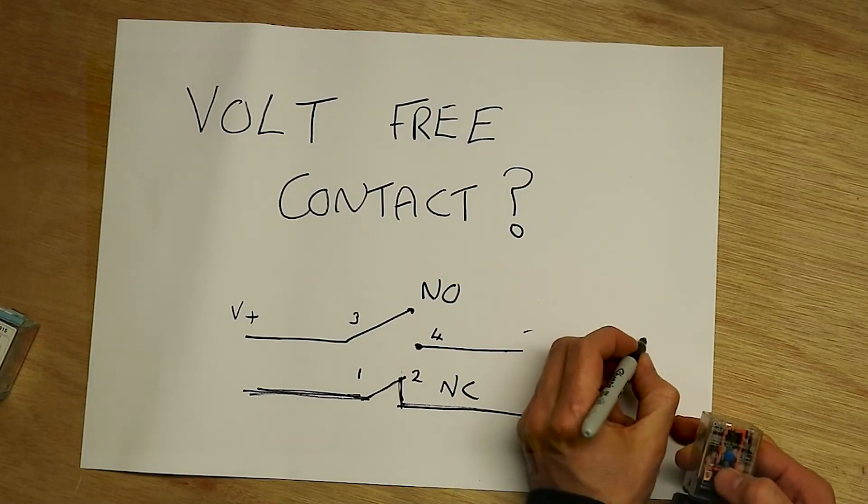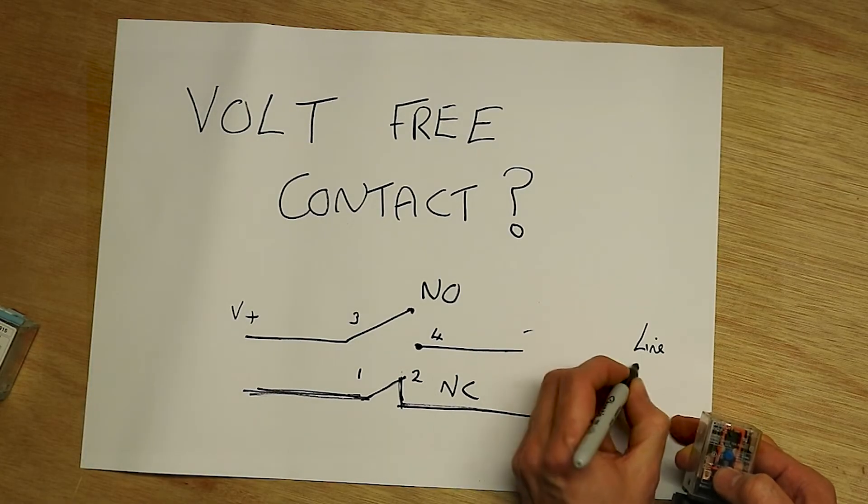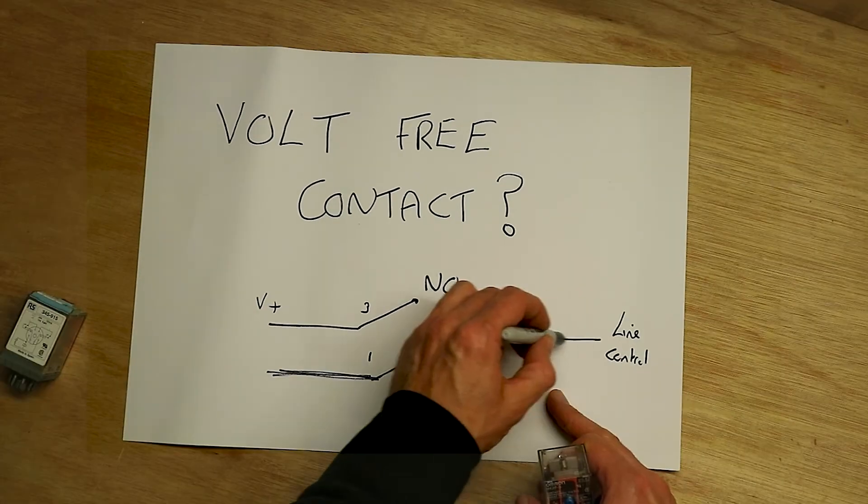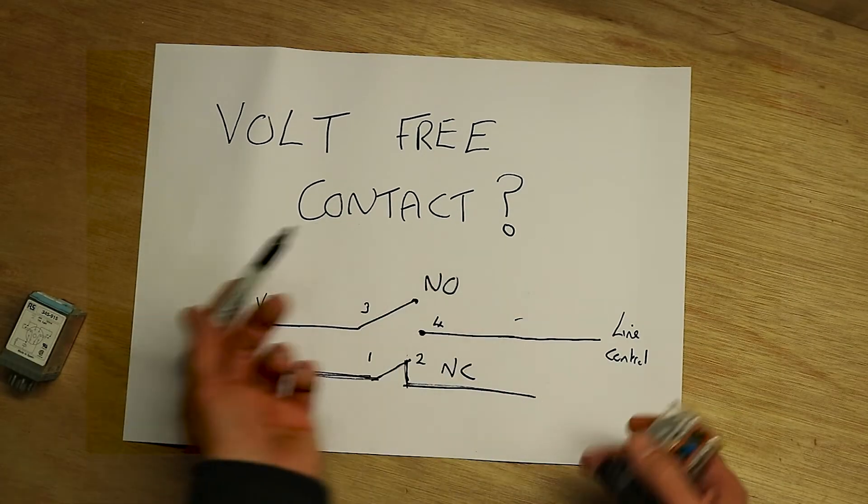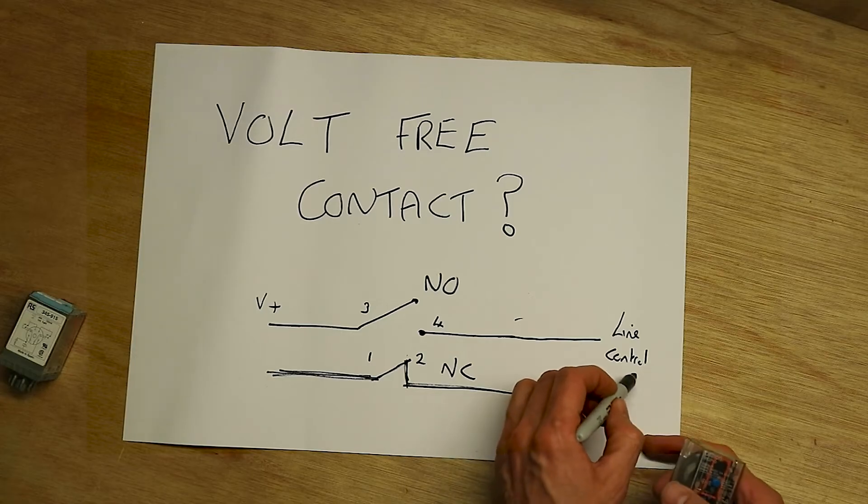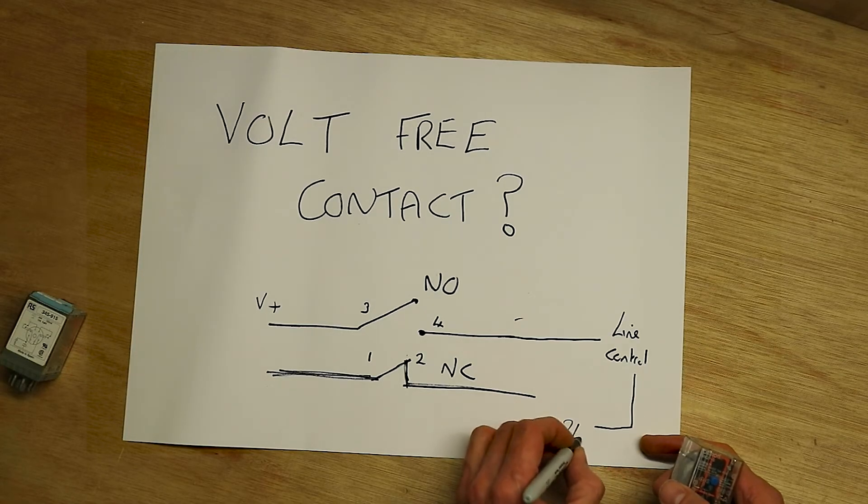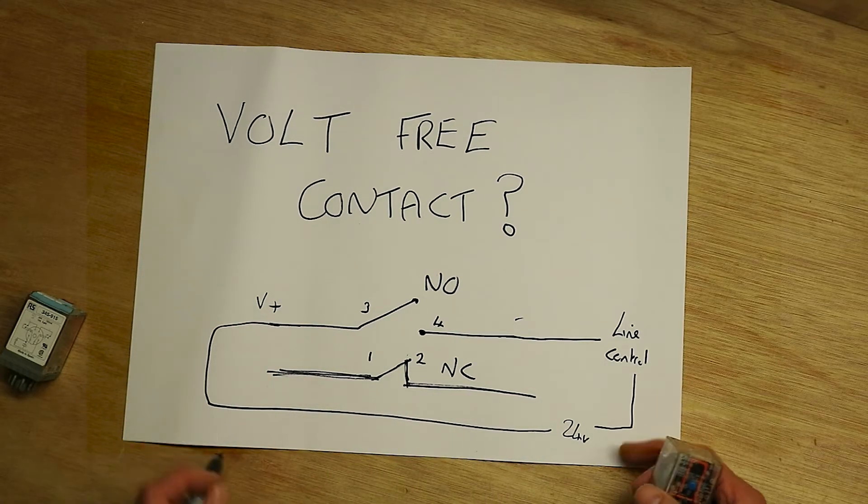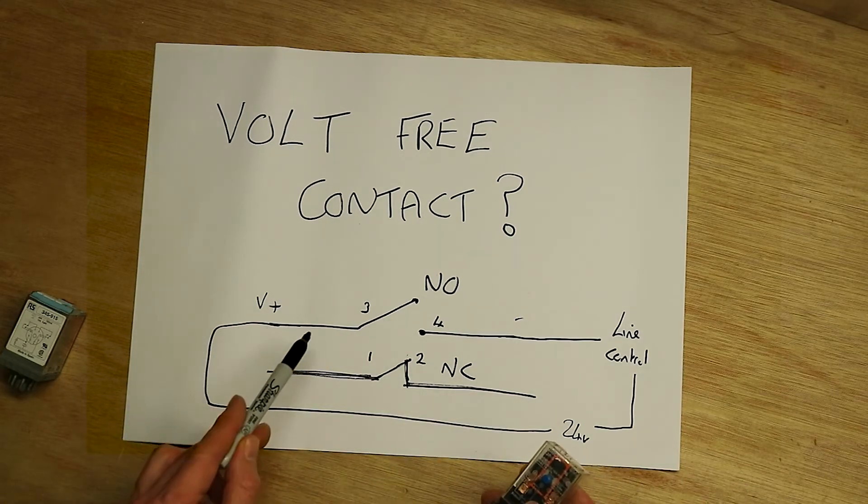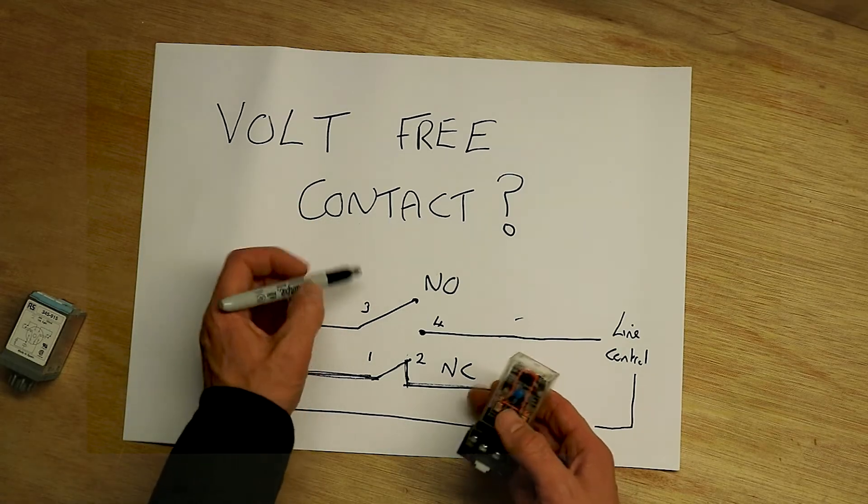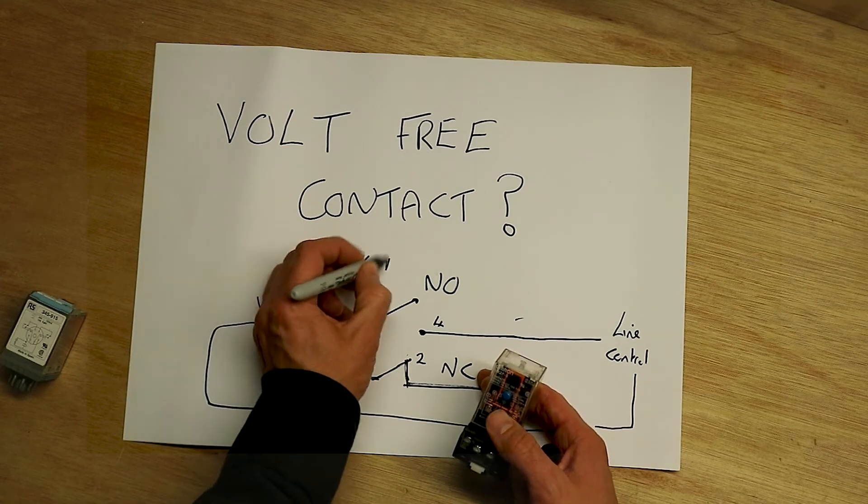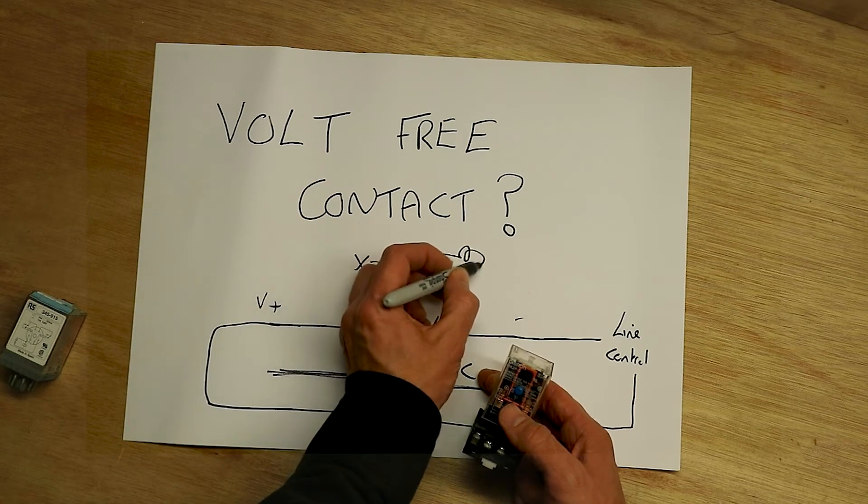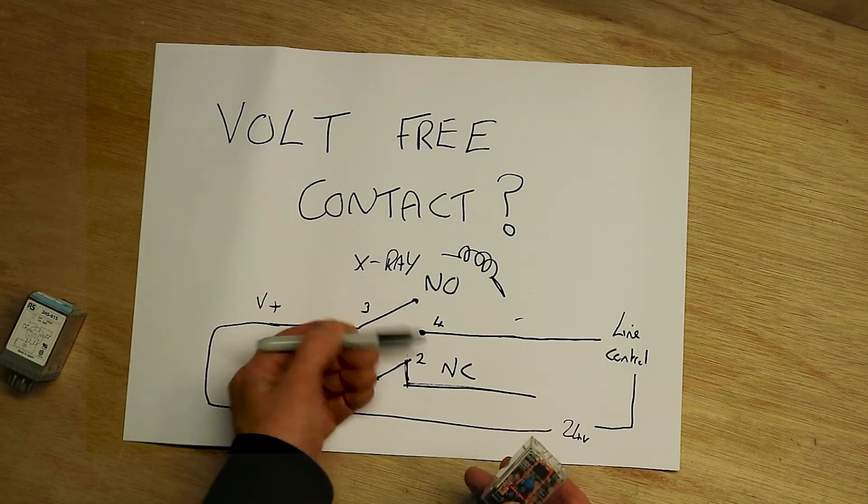Can you see that on there? Three and four, open door. So number four is line control panel. Effectively what we're doing is sending 24 volts all the way around that circuit. And when the x-ray pulls our coil in, that then closes that.